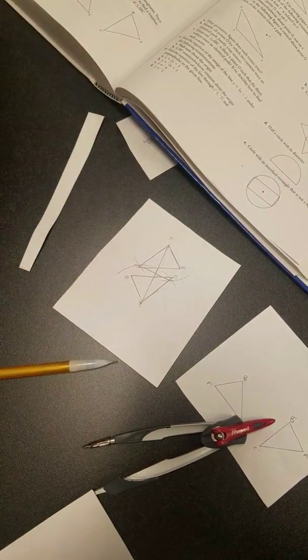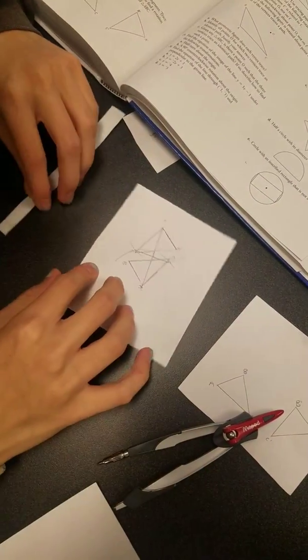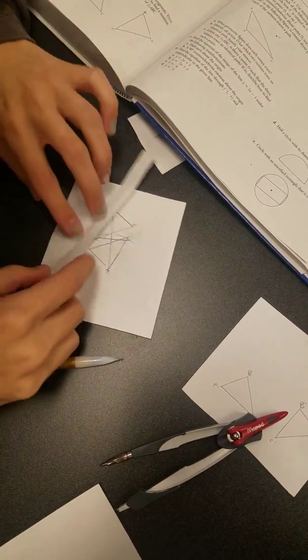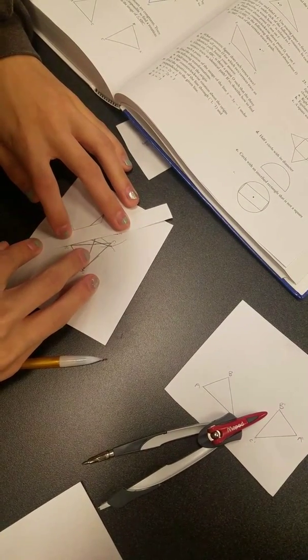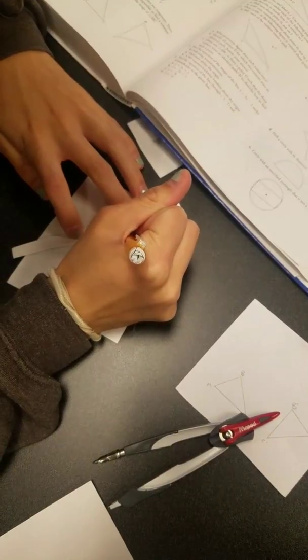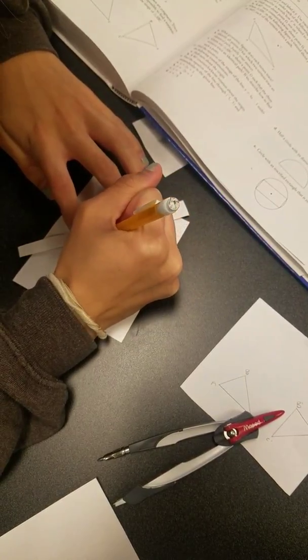So that line now is our perpendicular bisector for segment A and now we need to find, we need to do it again with two more points. So we're going to use our straight edge and take it from point B to B prime and draw a straight line.